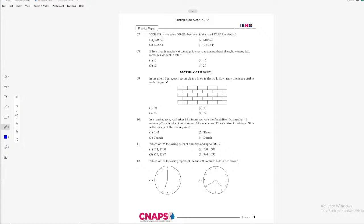Let us go to the next page. Question number 7. If chair is coded as D, I, B, J, S. Then what is the word table coded as? See, we have to compare, find out the relationship between the two words. Then only we can be able to find out what is the code for table. Chair, C and when you see here D, H, I, A, B, I, J, R, S. So basically what is happening? Each letter in the word is replaced by its next word in the English alphabet.